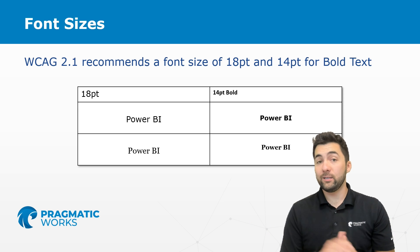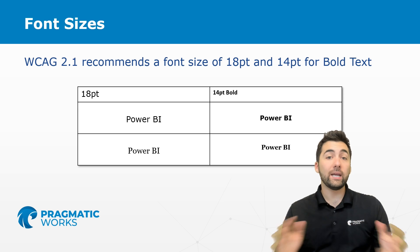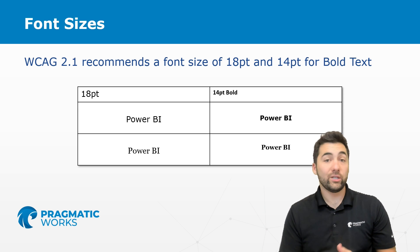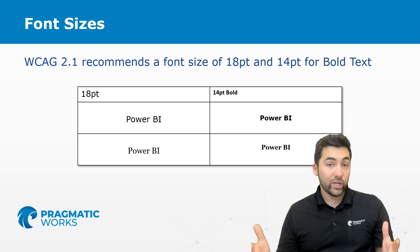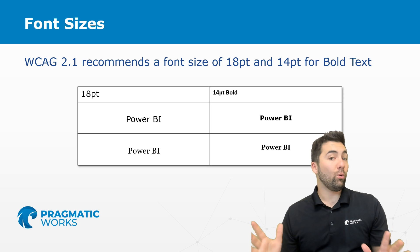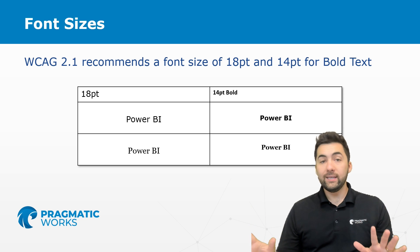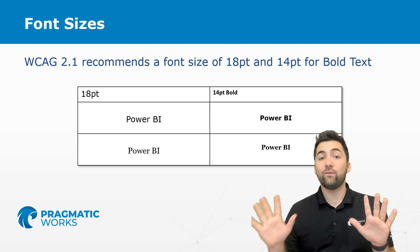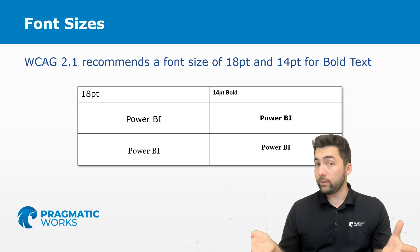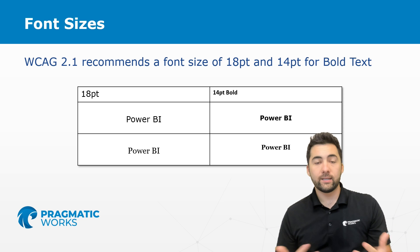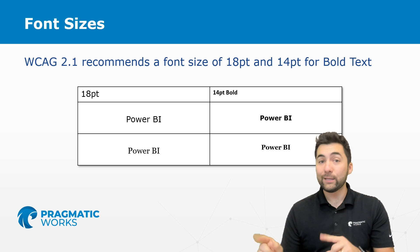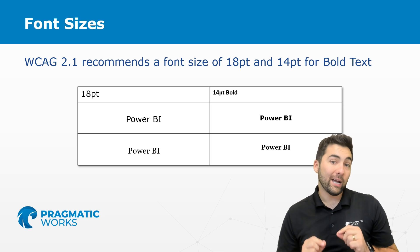The web content accessibility guidelines are a great resource. Even if you don't have to abide by them from a legal perspective, it's very important that you know this general rule for font sizes. One of those is 18 point regular and 14 point bold. That is the general suggestion in the web content accessibility guidelines 2.1. Things can update and more science can come about, but generally those are the font sizes we see, and that's the rule of thumb we can bring into our Power BI reports.